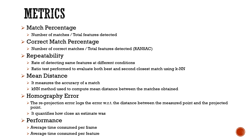These are the metrics used for evaluation. First is the match percentage, which is the number of matches detected divided by total features detected. The second metric is correct match percentage, which is the number of correct matches divided by total features detected.